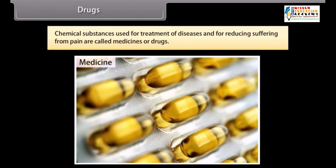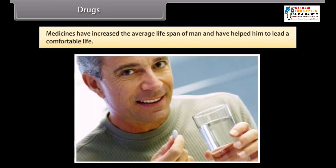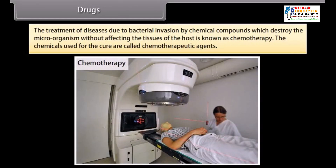Chemical substances used for treatment of diseases and for reducing suffering from pain are called medicines or drugs. Use of some chemical compounds as medicines has helped humanity in a number of ways — to cure diseases, to reduce suffering from pain, and to check population explosion. They have increased the average lifespan of man and helped him to lead a comfortable life. The treatment of diseases due to bacterial invasion by chemical compounds which destroy the microorganisms without affecting the tissues of the host is known as chemotherapy. The chemicals used for the cure are called chemotherapeutic agents.